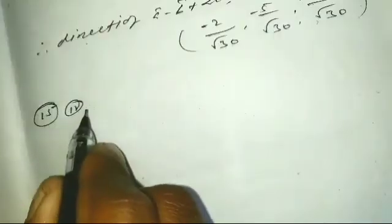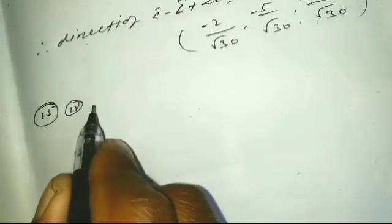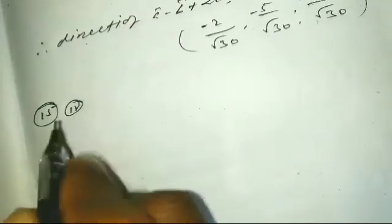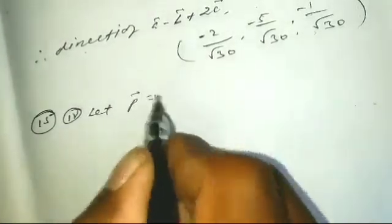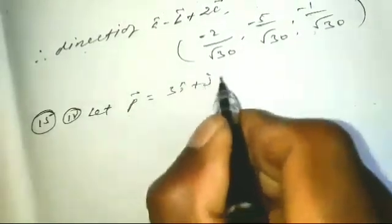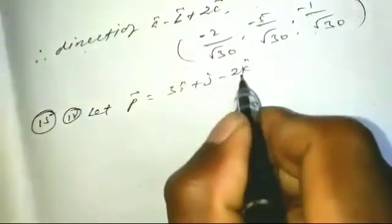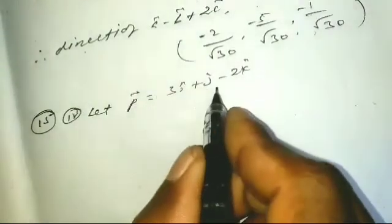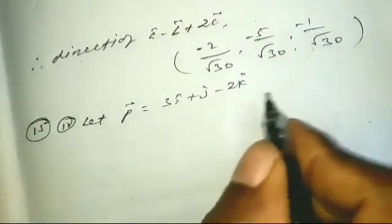Question number 15 — the vector is 3 i-cap plus j-cap minus 2 k-cap. Let p equals to 3 i-cap plus j-cap minus 2 k-cap.